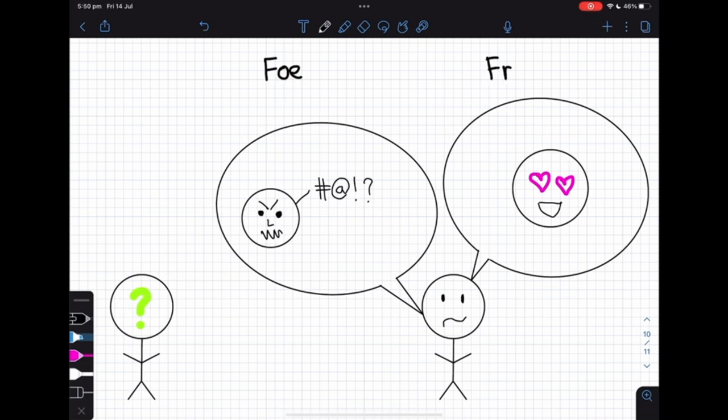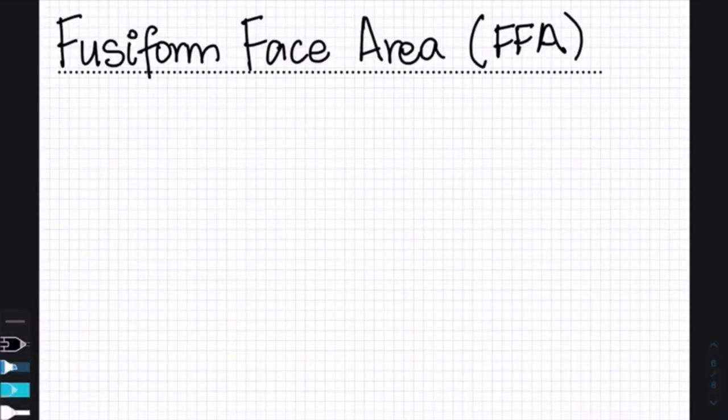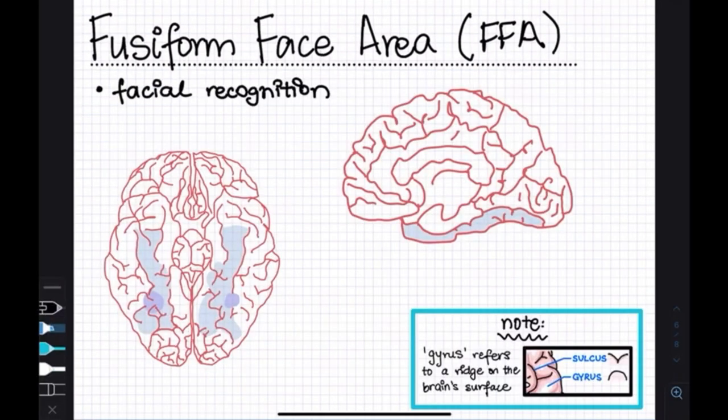This phenomenon is linked to the function of the fusiform face area, or the FFA, a region in the human brain that plays a crucial role in recognizing and discriminating between different faces, allowing us to identify individuals with ease.